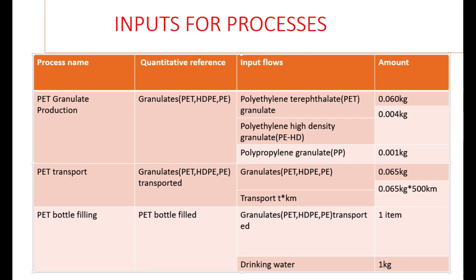And also polypropylene granulate in PP form at 0.001 kilograms. This is the first process that happens. The next process is PET transport. Once the granulates have been prepared and processed, they must be transported. The PET transport process is based on the amount of granulates produced and to be transported — that total is 0.065 kilograms.